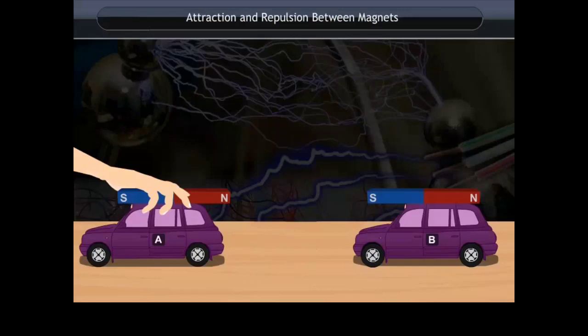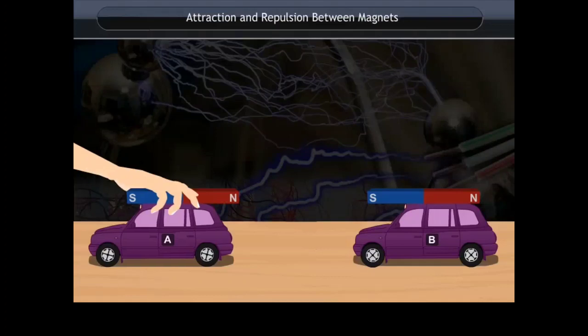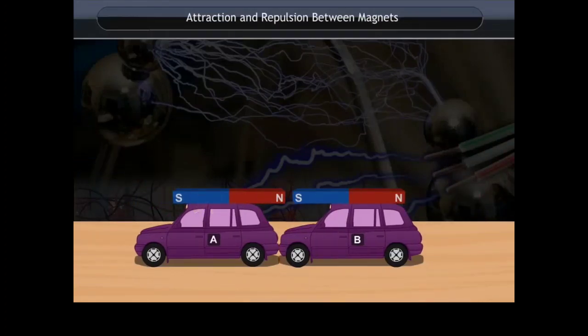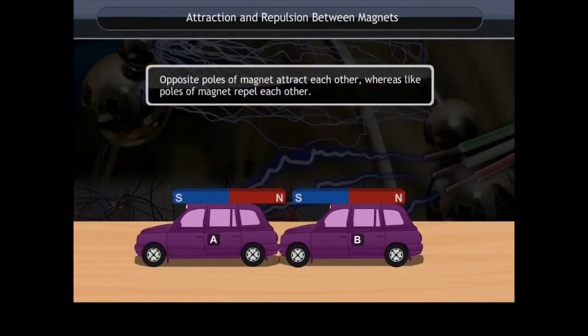Bring car A near to car B. You will find that car B attracts towards car A. This is called attraction. Opposite poles of magnet attract each other, whereas like poles of magnet repel each other.